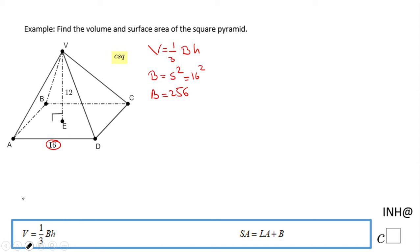Now we can go to the volume. The volume is 1 over 3—again do not forget about that 1 over 3—times the base, 256, times the height, which in this case is this 12 you see here.